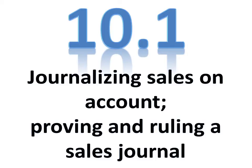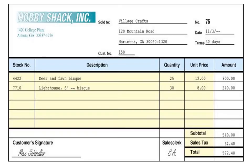Chapter 10 covers our other two new special journals: the Sales Journal and a Cash Receipts Journal. The difference between Chapter 9 and Chapter 10 is that in Chapter 10 we are selling stuff and receiving cash for items, whereas in Chapter 9 we were buying stuff and paying cash for stuff.